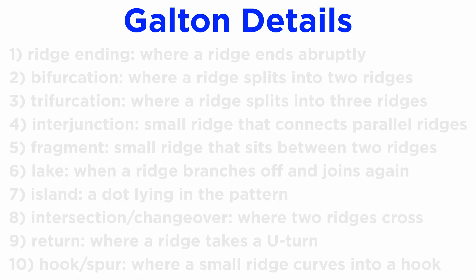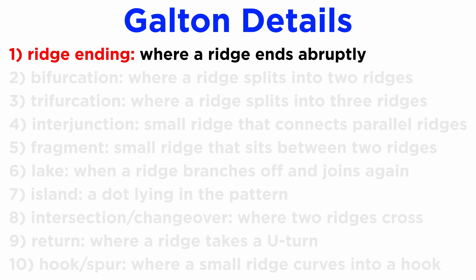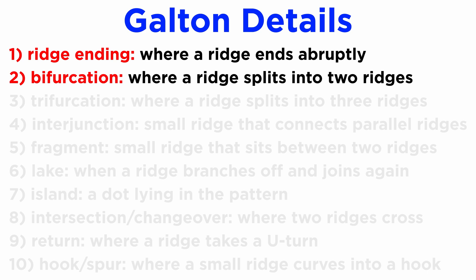Galton details can be majorly classified into the following types. 1. Ridge ending — the point where a ridge ends abruptly. This is the most commonly observed detail in a fingerprint impression. 2. Bifurcation — here, a ridge splits into two arms. Due to its shape, it is also known as a diverging fork. Bifurcations are abundantly observed in a fingerprint.